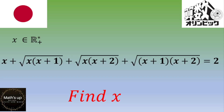Hello and welcome. In this video, we work on an exercise from the Japanese Math Olympiad. You want to find x, a strictly positive real number, such that x plus √(x(x+1)) plus √(x(x+2)) plus √((x+1)(x+2)) equals 2.